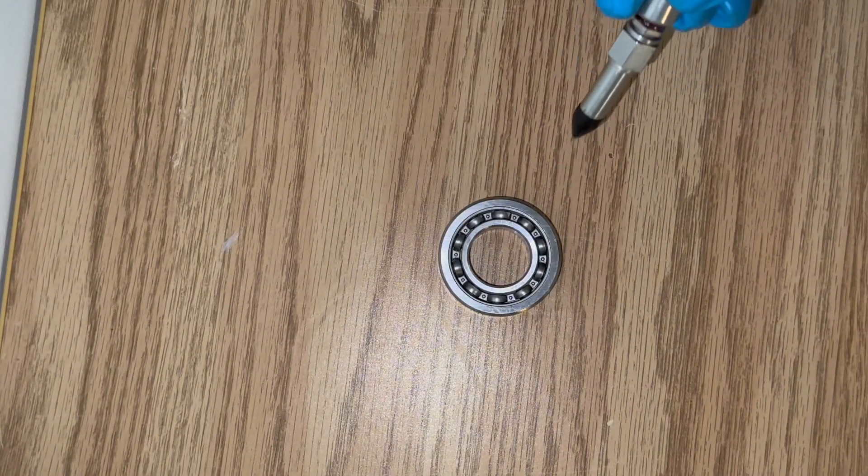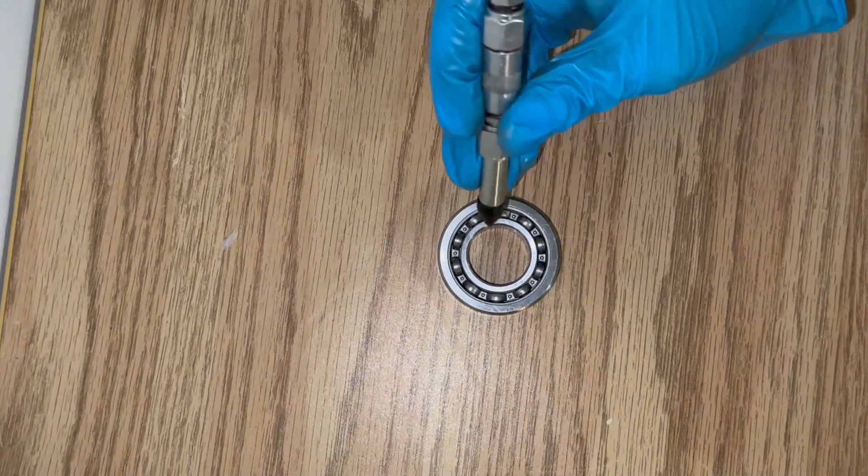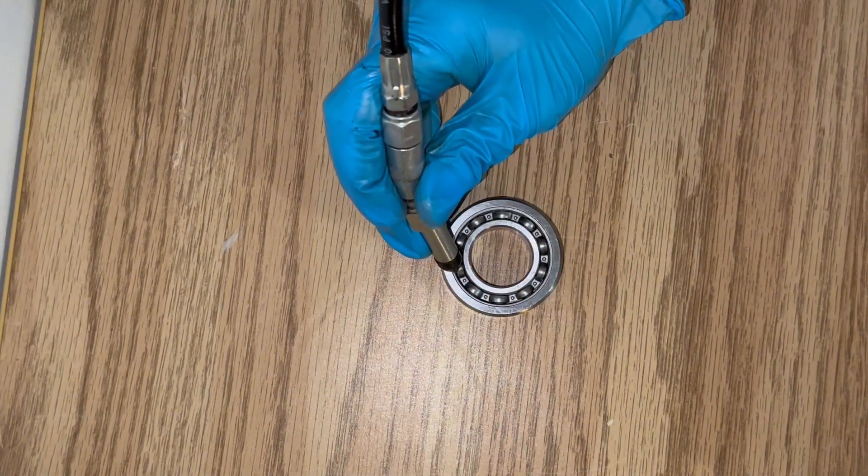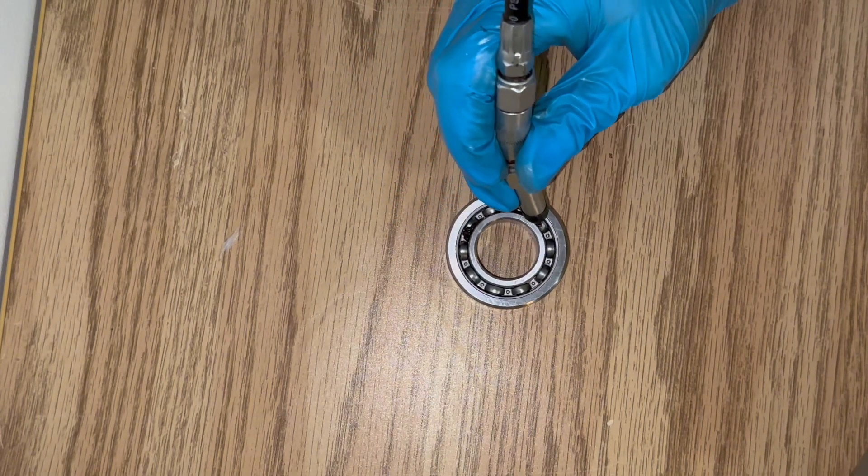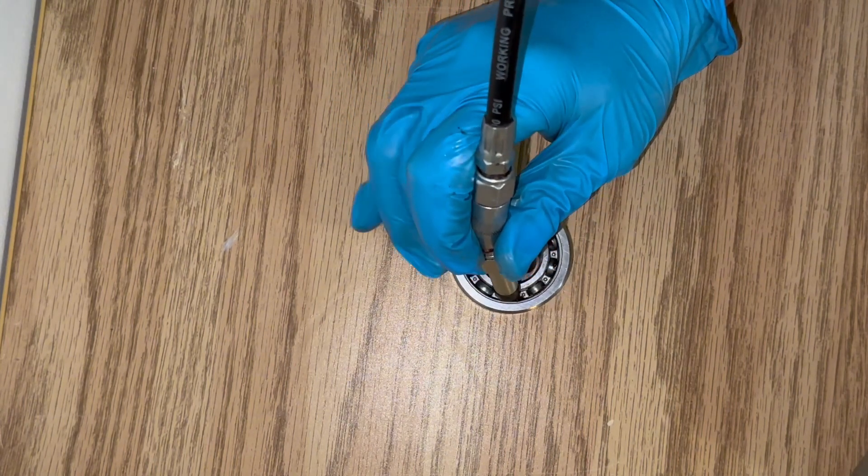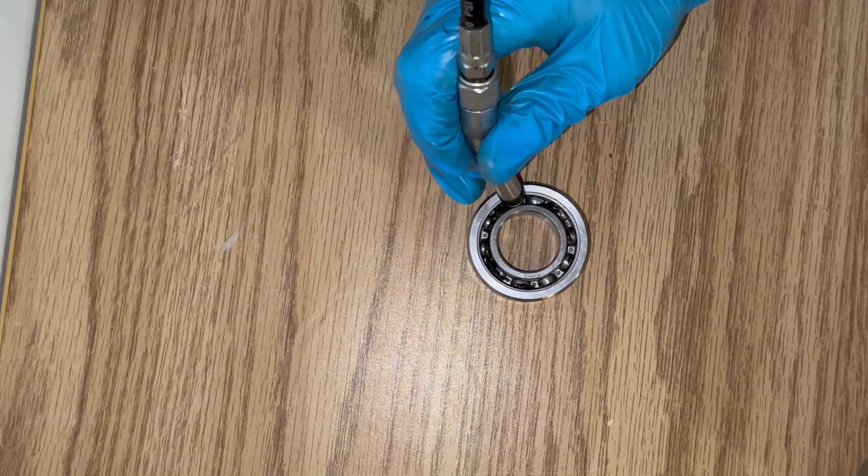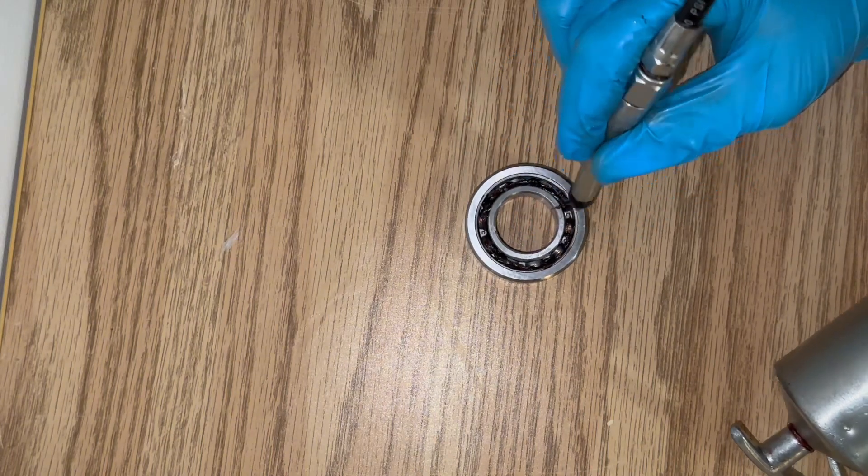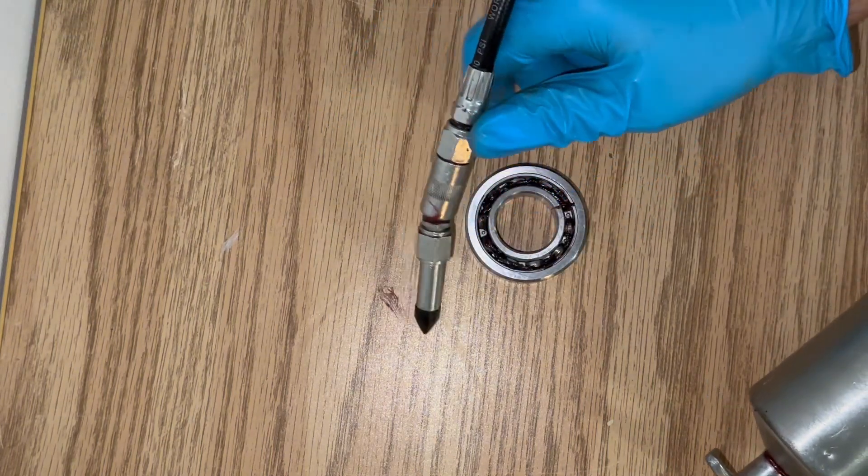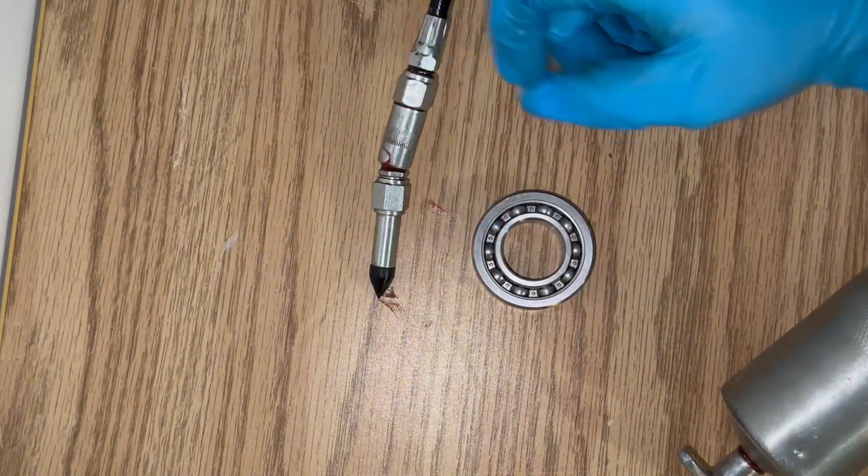All right, so once everything is all dried up, we're just going to dispense our fresh grease into our ball bearing. Flip it over and do the same for the other side.